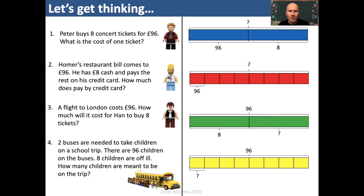What about question two? Homer's restaurant bill comes to £96. He has £8 cash and pays the rest on his credit card. How much does he pay by credit card? Well in this problem, the whole amount is the total bill which is £96. So we're looking for a bar that has 96 as the whole amount. How many parts is that bar split into? Well we pay some of the bill by cash and some by credit card, so we're looking for the bar that has 96 as the whole amount and is split into two parts. And we know that one of those parts is £8. So that must be the green bar.